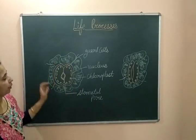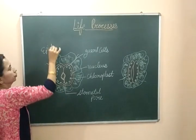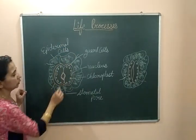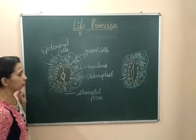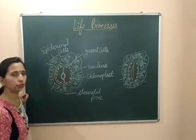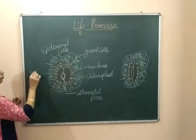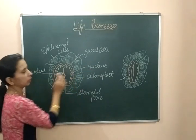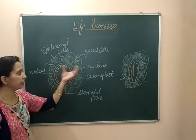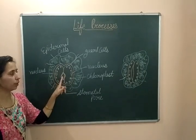These guard cells are also covered by some epidermal cells. Inside the guard cells, there are chloroplasts. These chloroplasts are present in the guard cells which also carry out photosynthesis, and there is also a nucleus in the guard cells. This complete structure is the stomatal structure, formed from the guard cells and the stomatal pore.